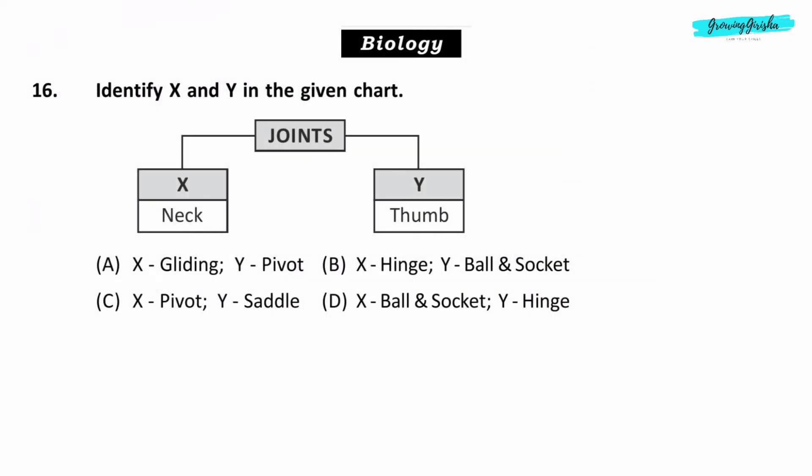Biology. Question 16. Identify X and Y in the given chart. Joints. X, neck. Y, thumb. Option C. X is pivot and Y is saddle.